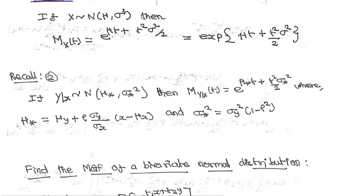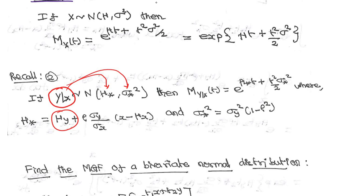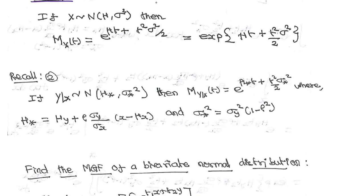The second idea: suppose instead of variable X, we have a variable with the conditional distribution y given X, whose mean value is mu-star and variance is sigma-star. The corresponding moment generating function of y given x, written as M_{Y|x}(t), equals exponential of mu-star times t plus t squared times sigma-star squared divided by 2.